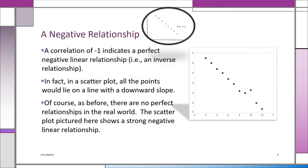Now we're looking at negative relationships. If you get an R of minus one — which again is not going to happen in the real world — all the points are on a straight line, showing a perfect negative linear relationship, also called an inverse relationship. But in the real world, you're more likely to see a scatter plot where it's definitely linear with a negative slope, but some points won't be on the line. What we see here is a very strong negative linear relationship, but it's not going to be minus one.